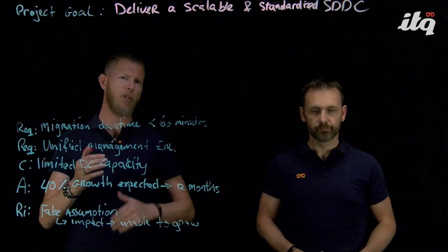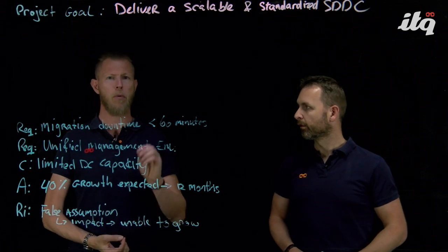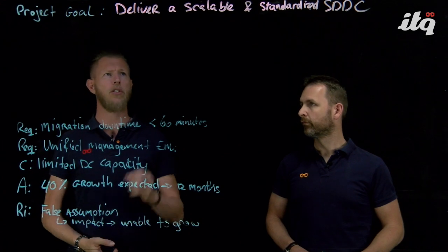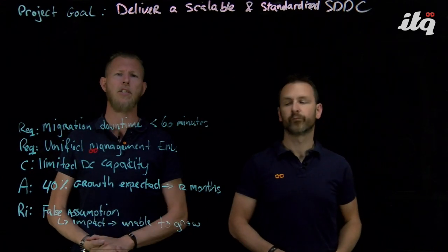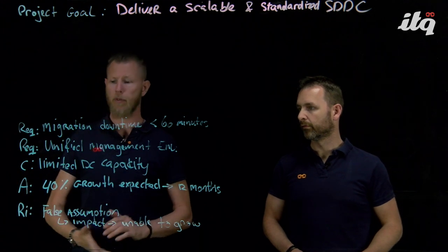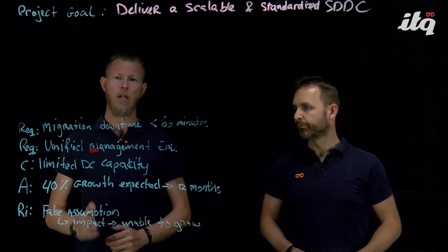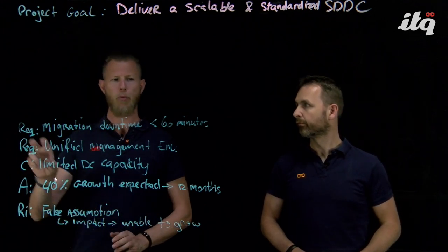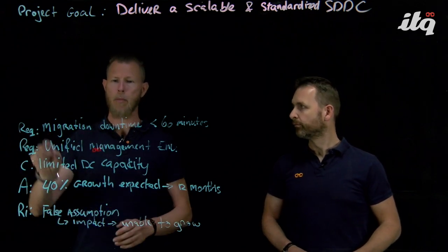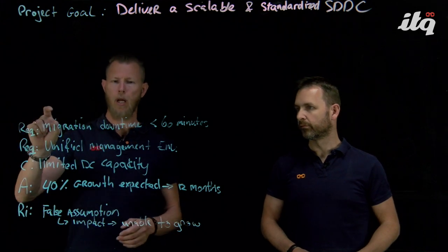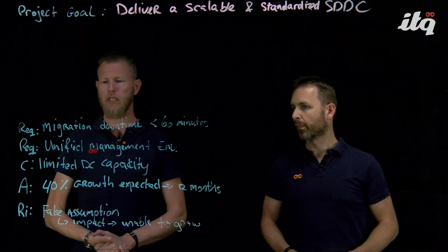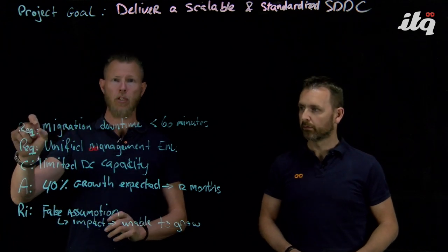There are a couple of different types of architectures. What we're going to talk about today is the conceptual architecture. Basically we have a project goal and the project goal is to deliver a scalable and standardized SDDC. We already wrote down here a couple of requirements, a constraint, an assumption and a risk. We have a customer with a functional requirement for a migration downtime of less than 60 minutes.